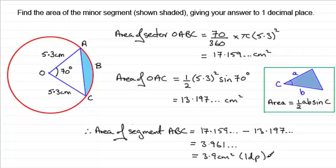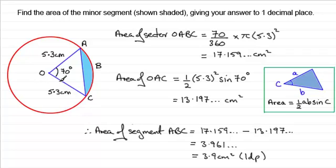Now if you're asked to find the area of the major segment, you could simply work out the area of the full circle — pi r squared — and then subtract the area of the minor segment. Alternatively, you could work out the angle for the major sector, which is 360 minus 70 degrees, giving 290 degrees, find the area of the major sector, and then add the area of the triangle to get the area of the major segment. I hope that gives you an idea of how to work out areas of segments.